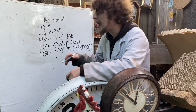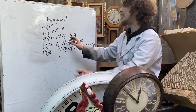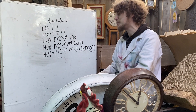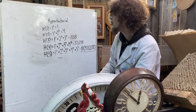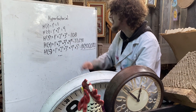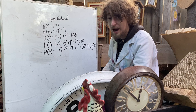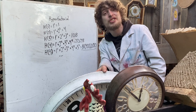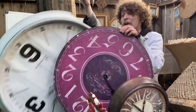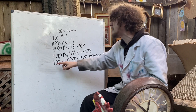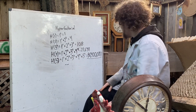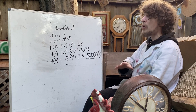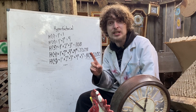There are also hyperfactorials, which look like factorials but each term is raised to its own power before being multiplied. The third hyperfactorial is 1 to the 1st power times 2 to the 2nd power times 3 to the 3rd power, which is 108. And just like factorials had fun relationships to time, the fifth hyperfactorial is the exact number of milliseconds — one-thousandths of a second — in one day.